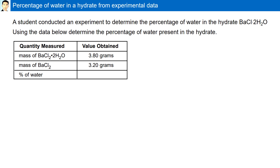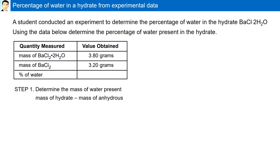The percentage of water in a hydrate from experimental data. A student conducted an experiment to determine the percentage of water in the hydrate BaCl2·2H2O, barium chloride dihydrate. Using the data table, the mass of the hydrate before heating is 3.80 grams, and after heating the mass is 3.20 grams. Step one is to determine the mass of water present: subtract the mass after heating from the mass before heating — 3.80 grams minus 3.20 grams — giving 0.600 grams of water present in the sample.